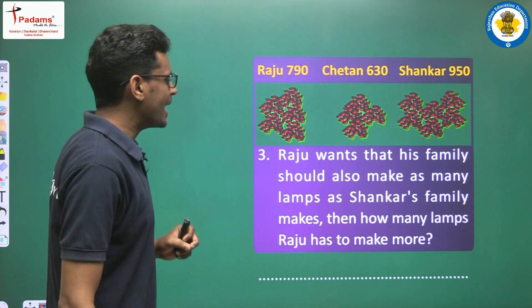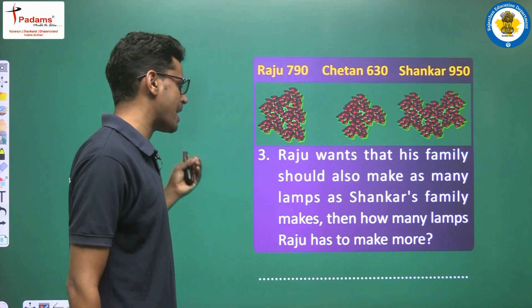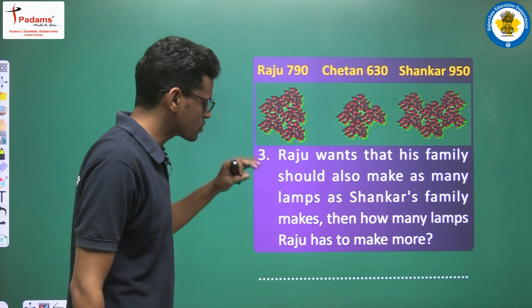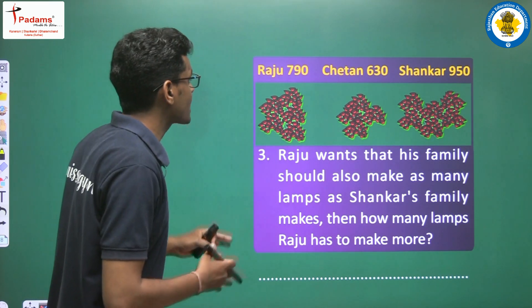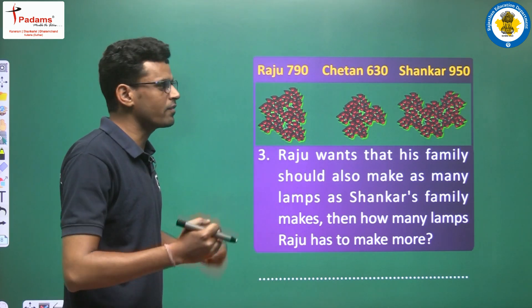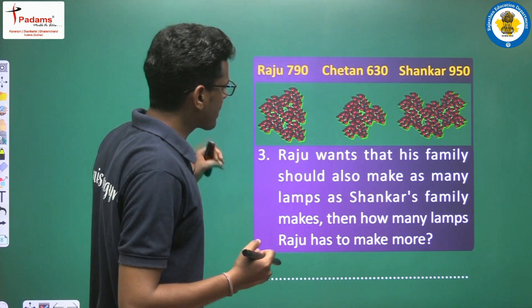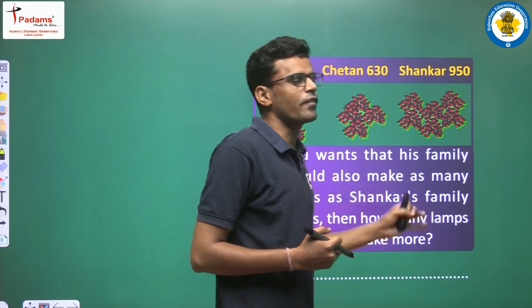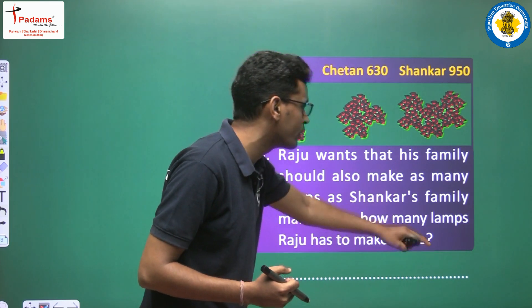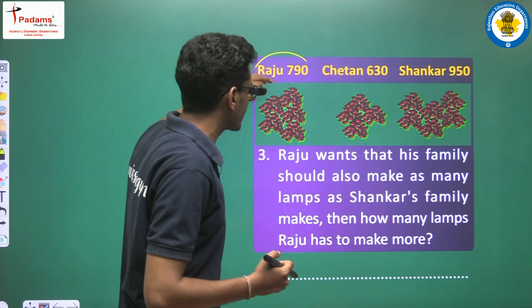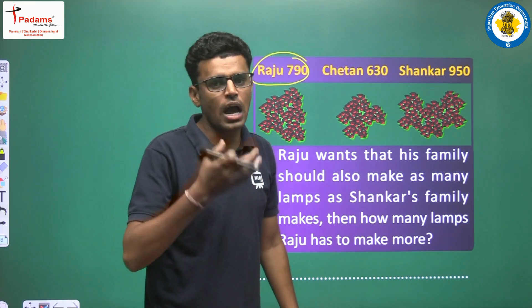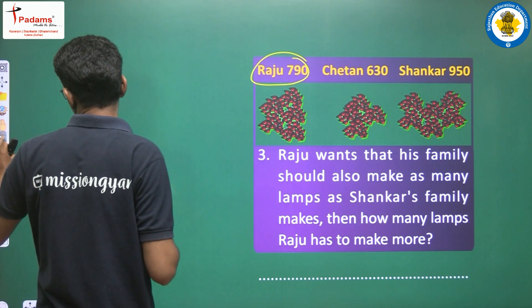Raju wants his family to make as many lamps as Sankar's family — the maximum. So how many more lamps does Raju have to make? That means: what is the difference between Sankar's lamps and Raju's lamps? We need to find how many more Raju needs to create.